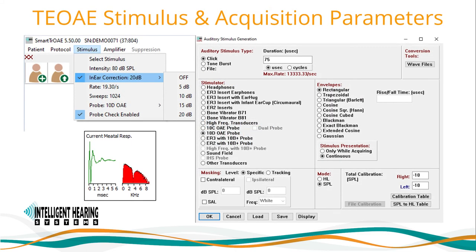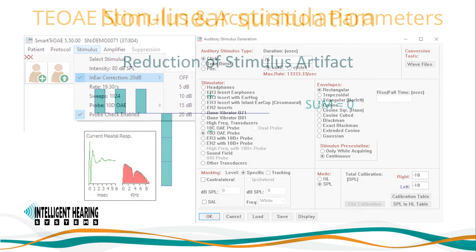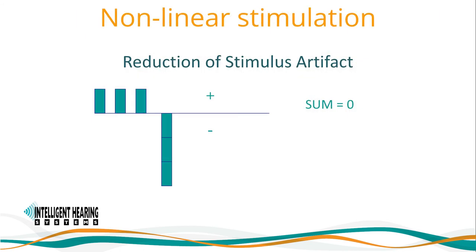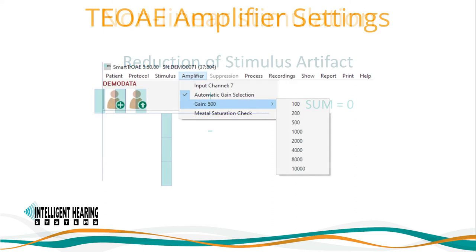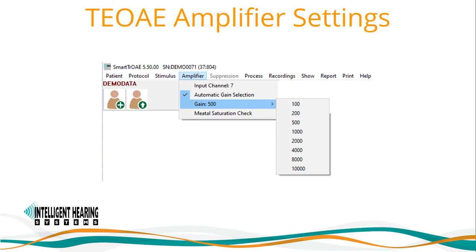In the stimulus menu, you can set up various acquisition parameters such as selecting your stimulus type, intensity, in-ear calibration range, rate, sweep count, probe selection, and probe check. TEOAE responses are mostly click evoked, at testing levels of 85 to 95 dB SPL, using a 75 microsecond duration biphasic alternating click with spectral energy from 500 Hz to 5000 Hz. The non-linear stimulation is used to reduce stimulus artifacts of high intensities. The amplifier gain can be set to be chosen automatically by the testing software or manually selected. All selections can be saved as part of your default settings in the protocol menu.